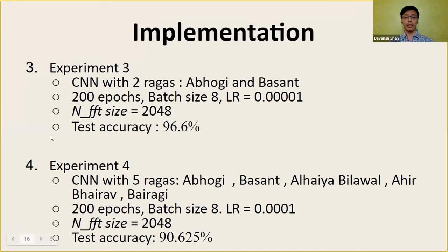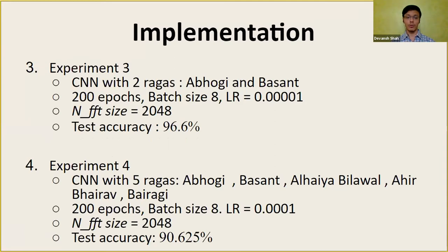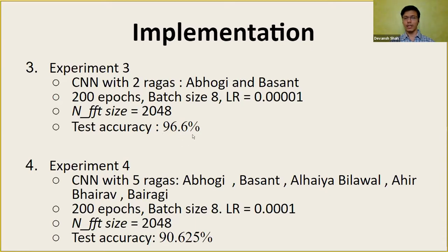In experiments three and four, we changed the value of NFFT, a hyperparameter in the Short-Time Fourier Transform unit. NFFT is the number of frequency bins in the output of the Fourier transform — by changing it, the visual appearance of the spectrogram changes. We ran experiments one and two again with a different NFFT value, but the test accuracies were almost the same, meaning the model compensated for the different look of the spectrogram.